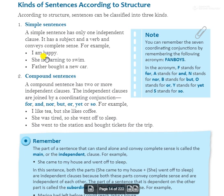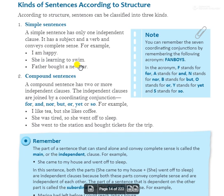For example: 'I am happy' — one subject, one verb. 'She is learning to swim' — subject is 'she', action is learning to swim. 'Father bought a new car' — subject is father, verb is bought. So in a simple sentence, there is only one subject and one predicate.